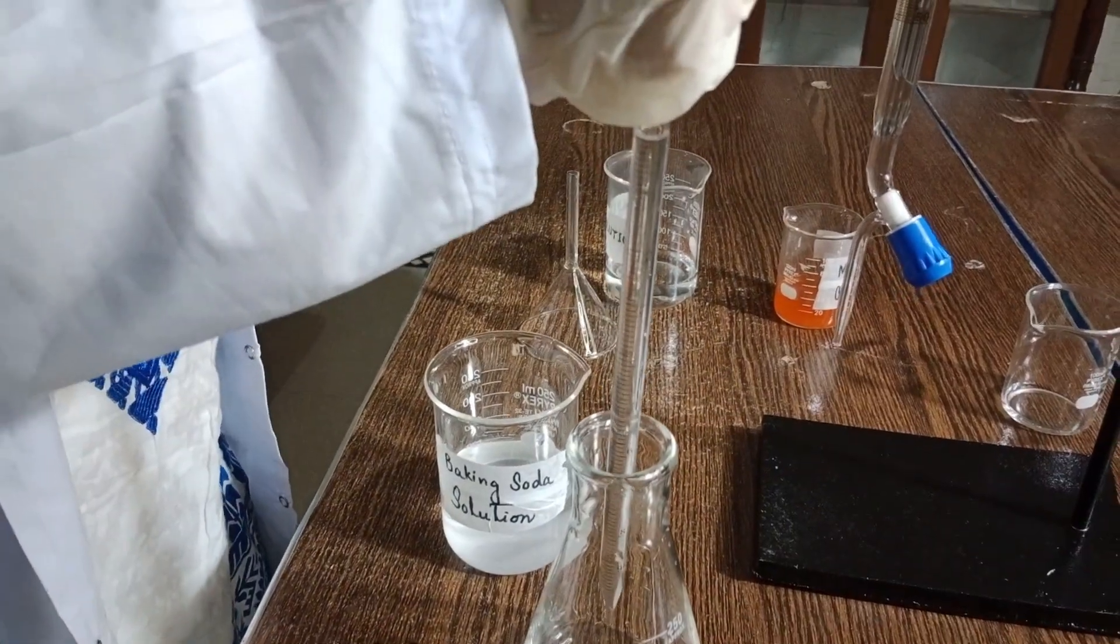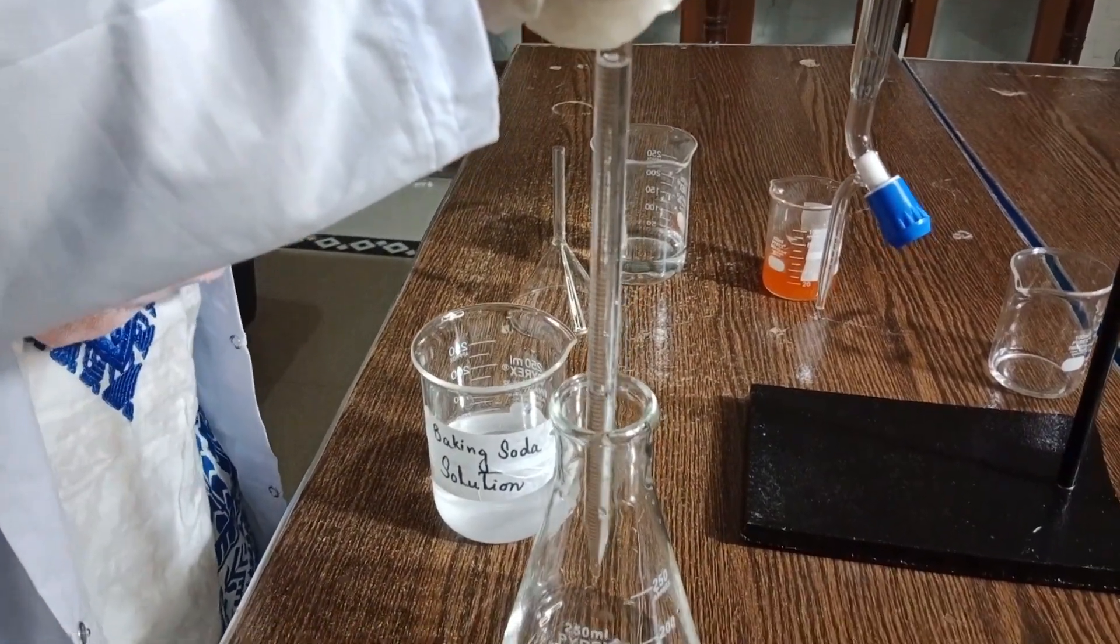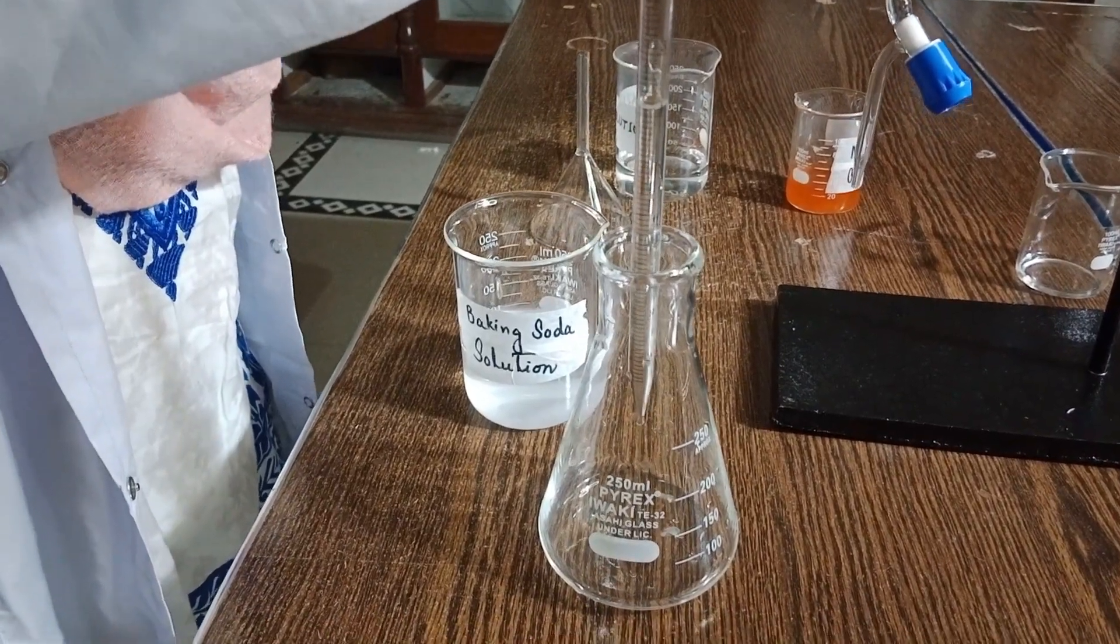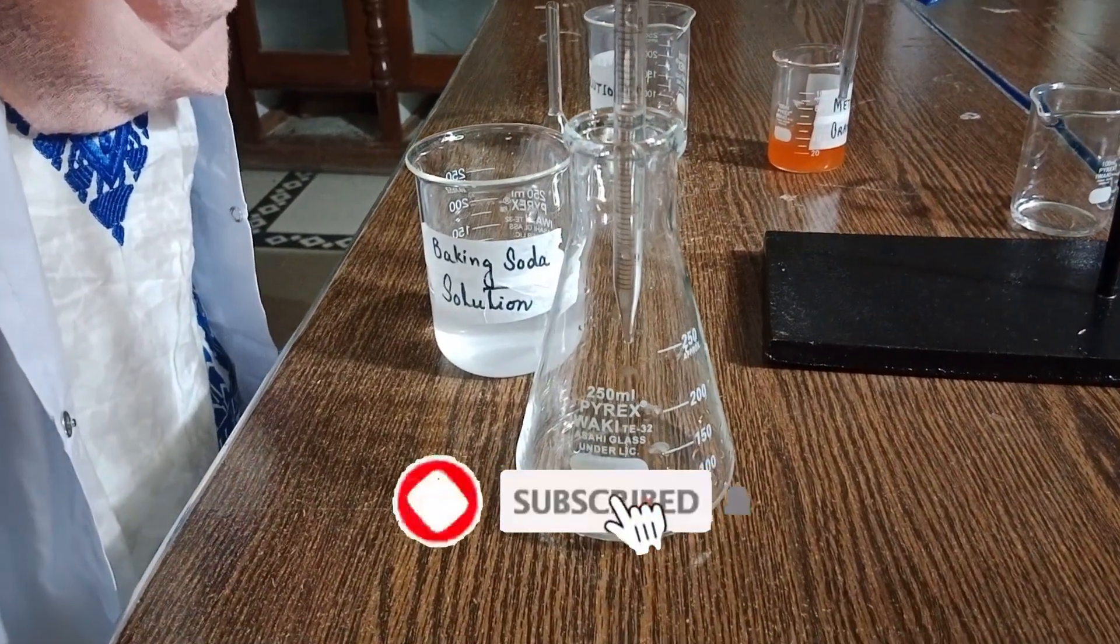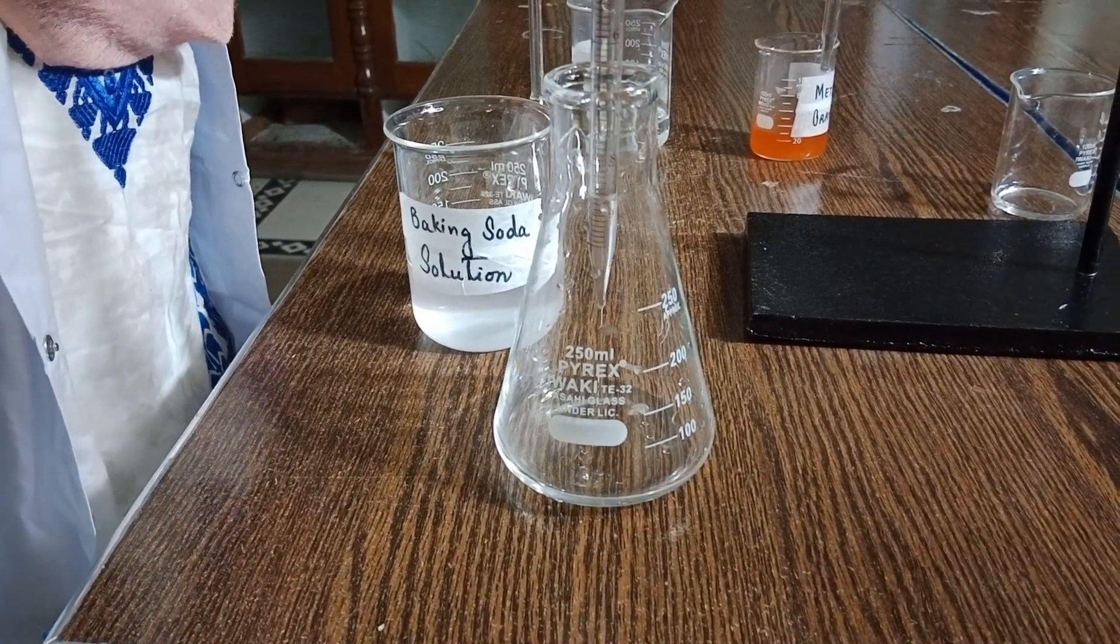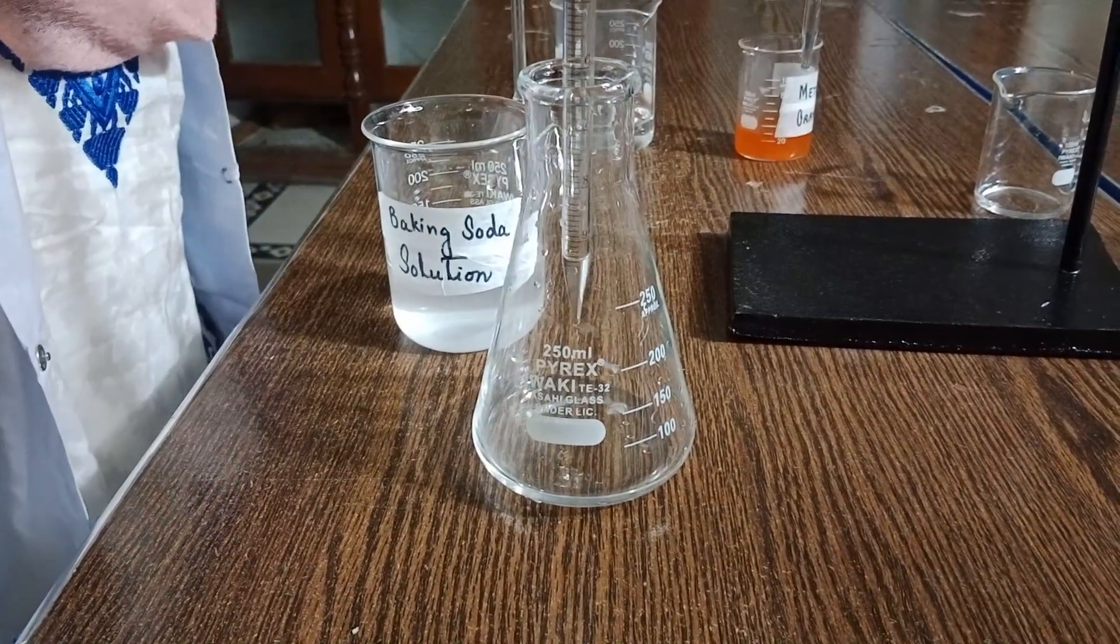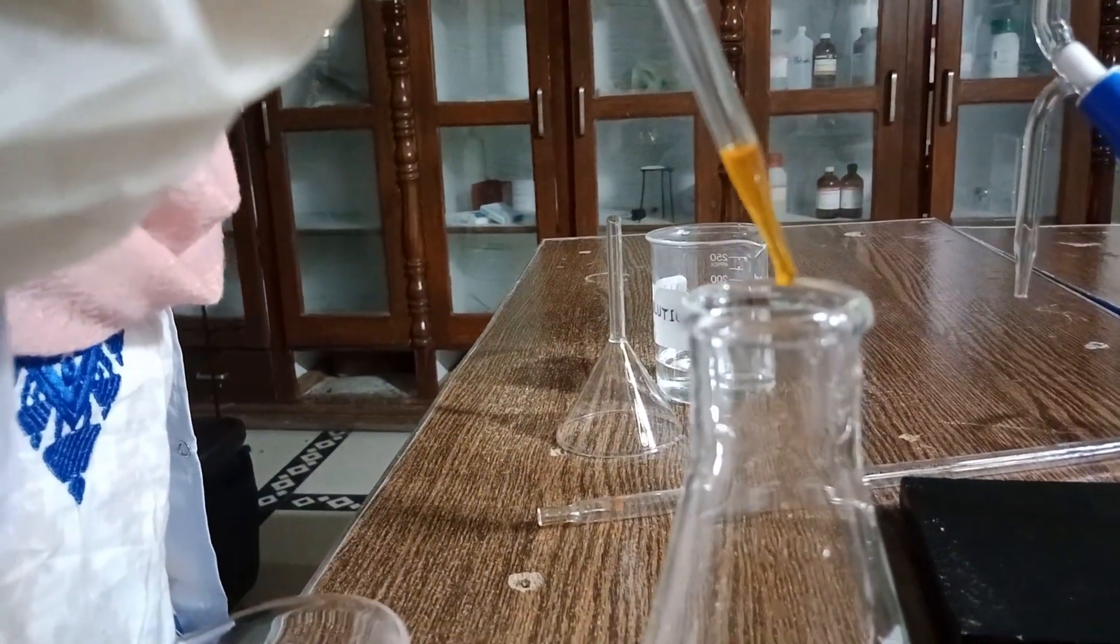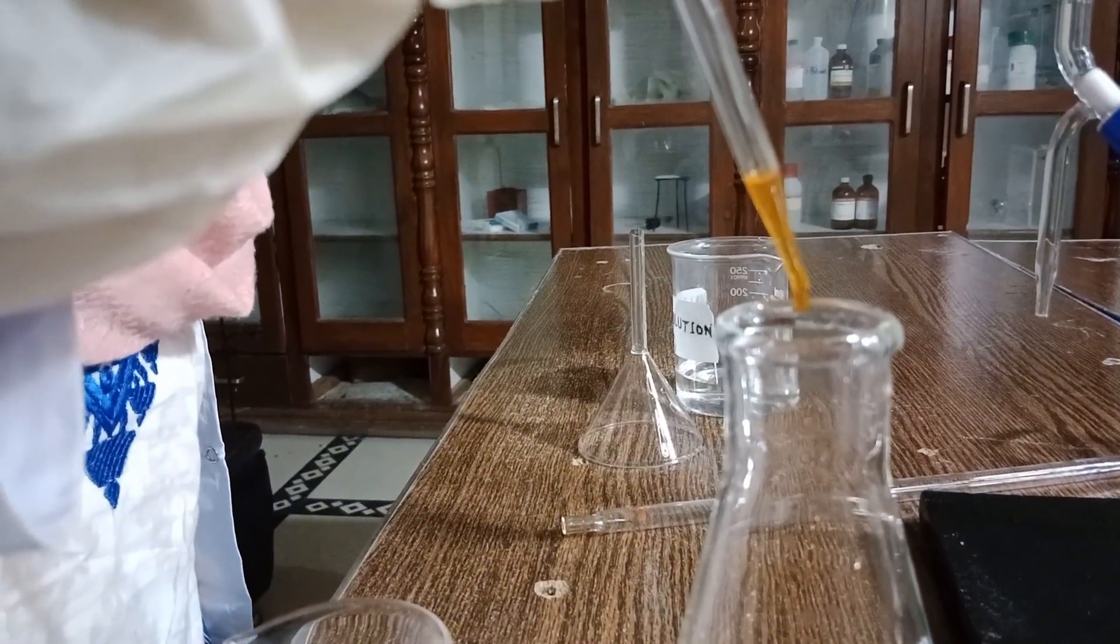Take 10 cubic centimeter baking soda solution using a pipette and transfer it to the conical flask. Add two to three drops of methyl orange indicator. The solution will turn yellow because methyl orange in basic medium is yellow.